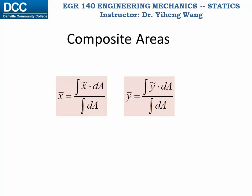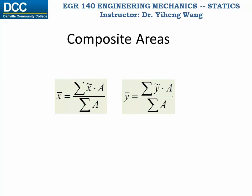Therefore, for a composite area that is made up of a countable number of simpler areas, all we need to do is to replace the integration sign in these two equations with summation sign. And now we have the formulas to calculate the centroid for a composite area.